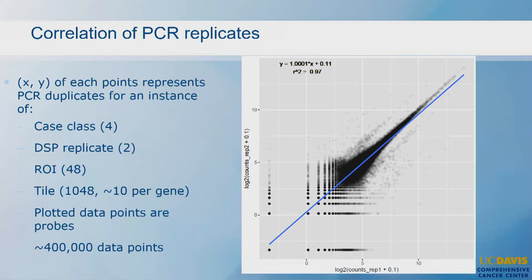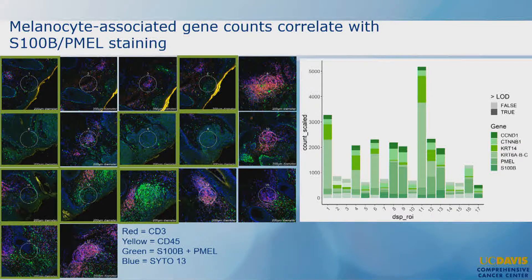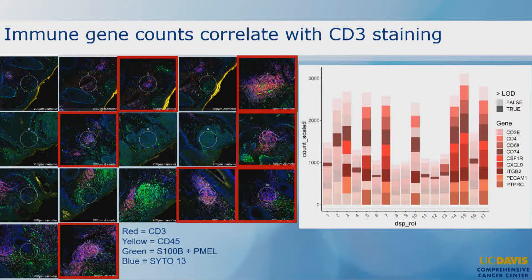We also looked at the IHC-stained regions. Looking at the two melanocyte markers, we saw genes associated with melanocytes — like those carrying keratin — correlating with staining intensity. For immune gene counts, regions staining with CD3 showed other immune-type markers being expressed in those regions and not in regions that didn't stain as much. We were satisfied that what we were detecting was reproducible and correlated with the IHC markers.